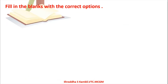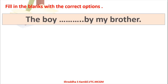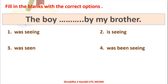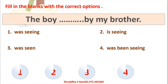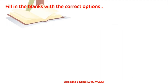Next example: 'The boy ___ by my brother.' Options: (1) was seen, (2) is seen, (3) was seen, (4) was been seen. Option 2 uses 'is' which seems off in context; option 4 has unnecessary words. The answer is answer number 3: 'The boy was seen by my brother.'